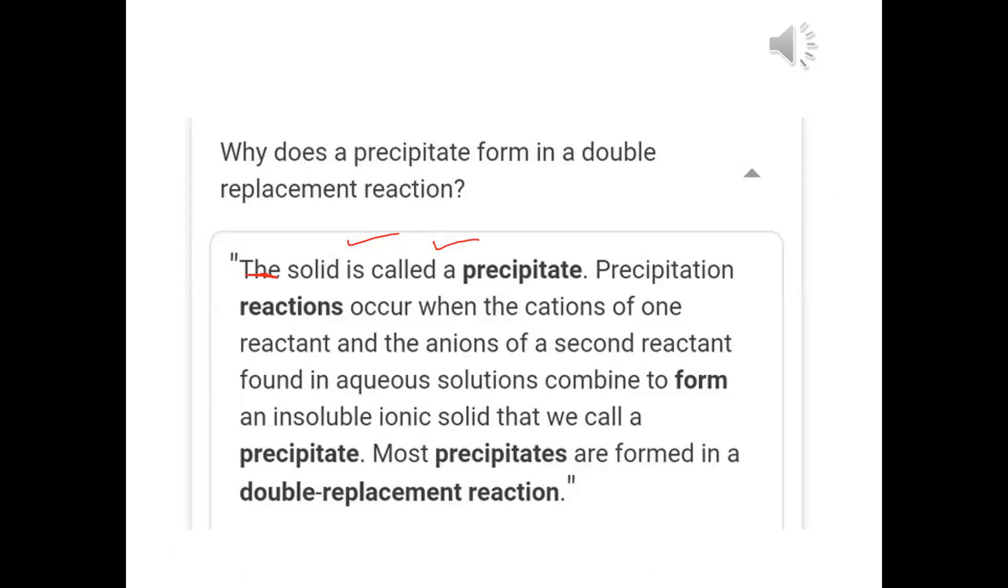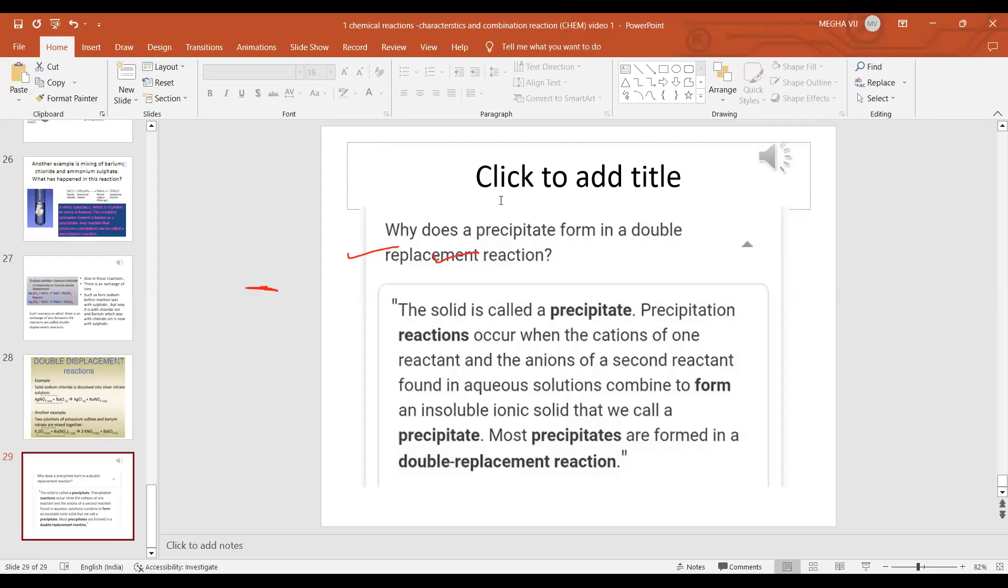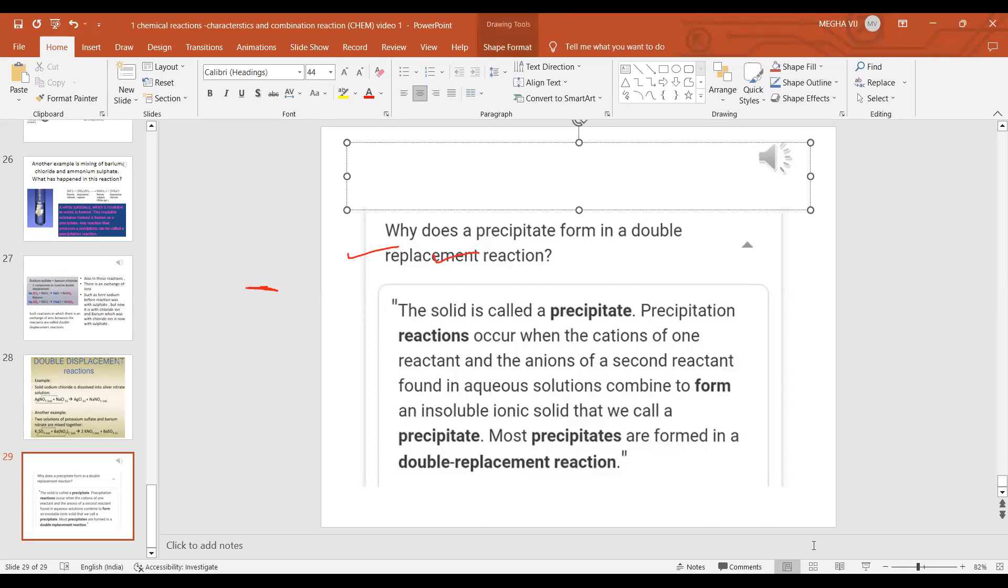This is an important question which may come. Why does a precipitate form in double displacement? Precipitation occurs when cation of one and anion of another, whenever an insoluble substance will be formed. We call it as a precipitation. Most precipitates, it is not always precipitation reactions, mostly, generally, they are formed in a double displacement reaction. I hope you have understood the four types of chemical reactions which we have learned today.